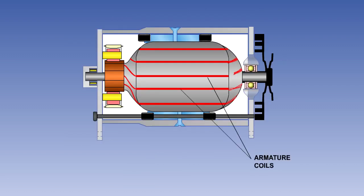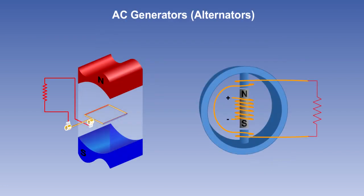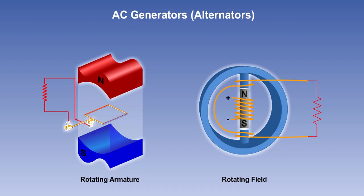In a DC generator, the rotating part is always the armature. In an AC generator, this is not necessarily true. There are two types of AC generator: the rotating armature type, and the rotating field type.